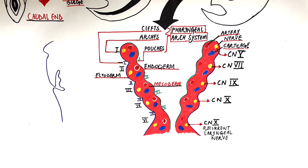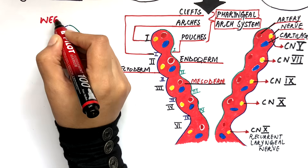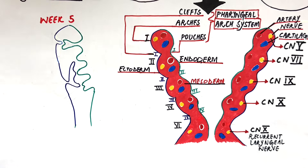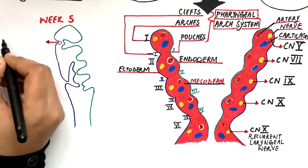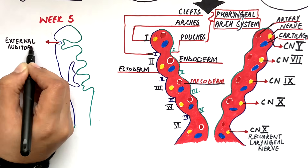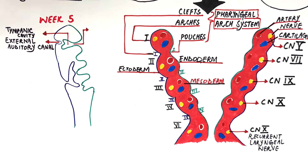Now let's look at the derivatives of the pharyngeal arch system, starting with the grooves and pouches. The first groove and pouch are involved in the formation of ear structures such as the external auditory meatus, the primordial tympanic cavity and the Eustachian tube. The part of the arch left in between the primordial tympanic cavity and the external auditory meatus will eventually become the future tympanic membrane.